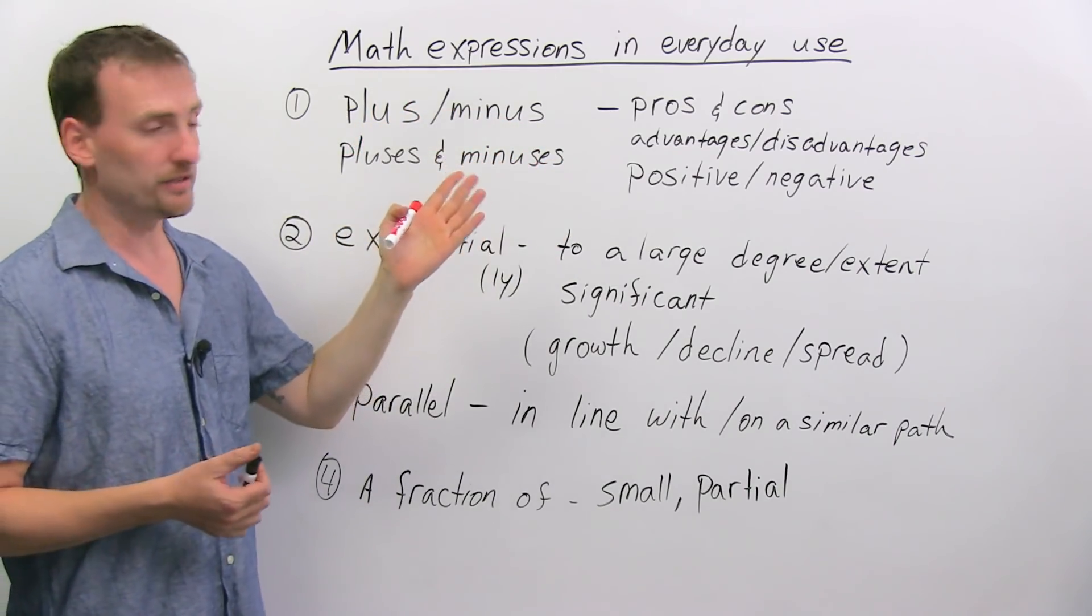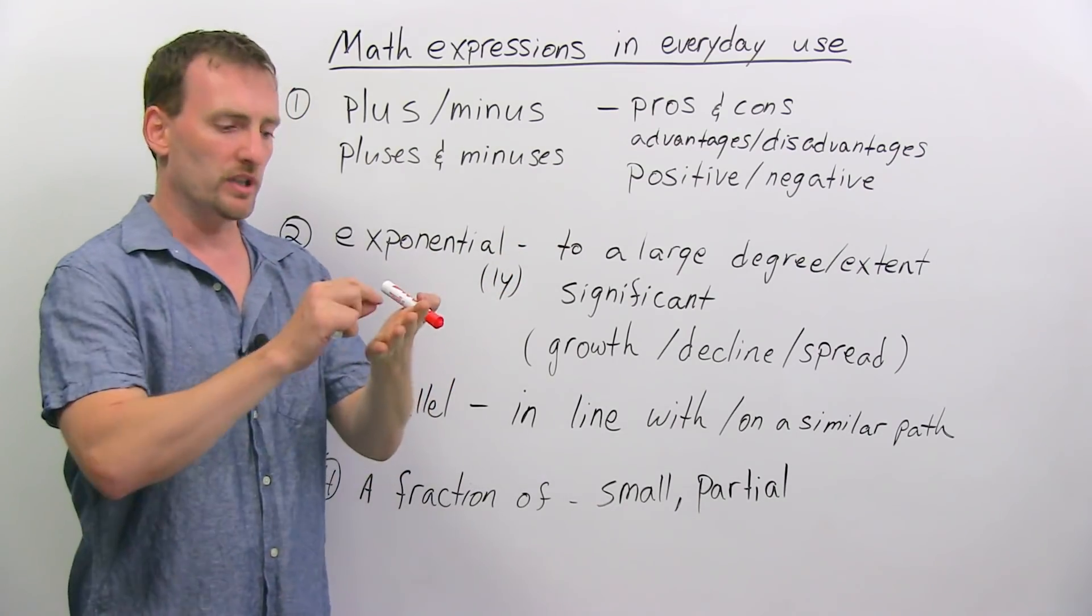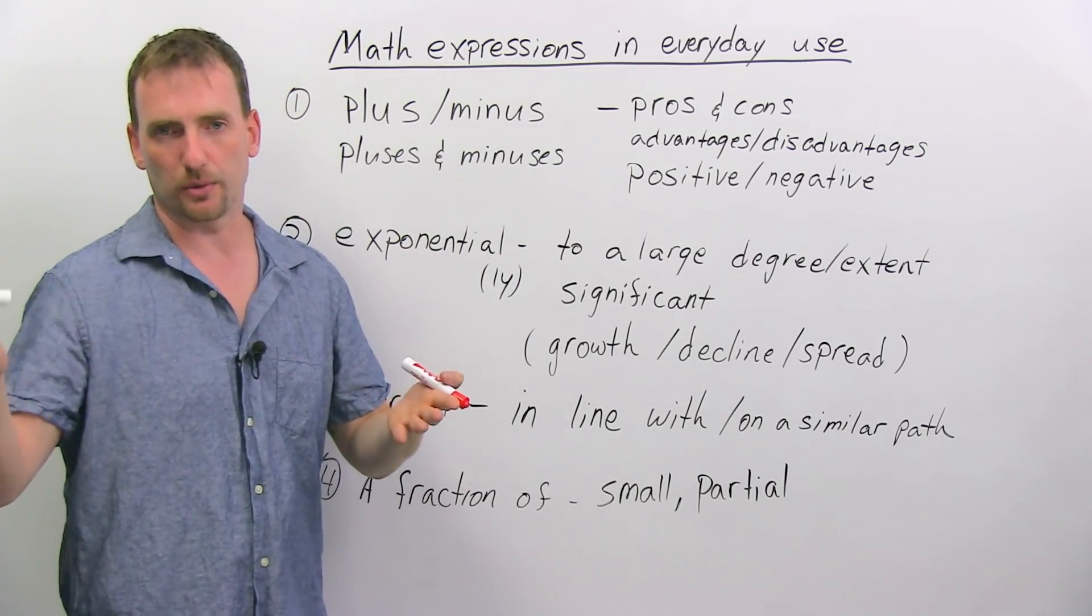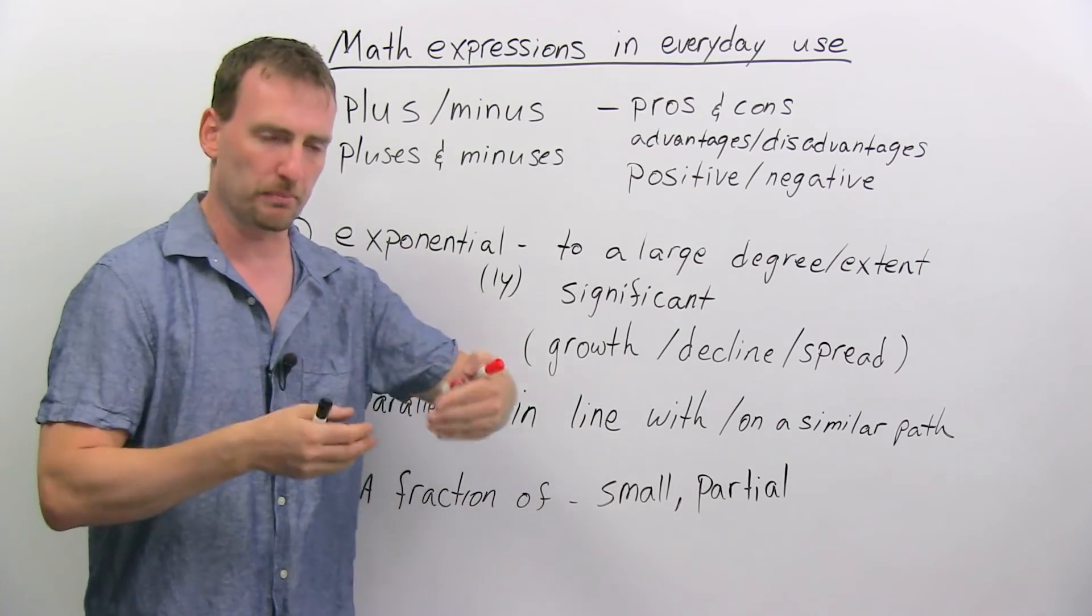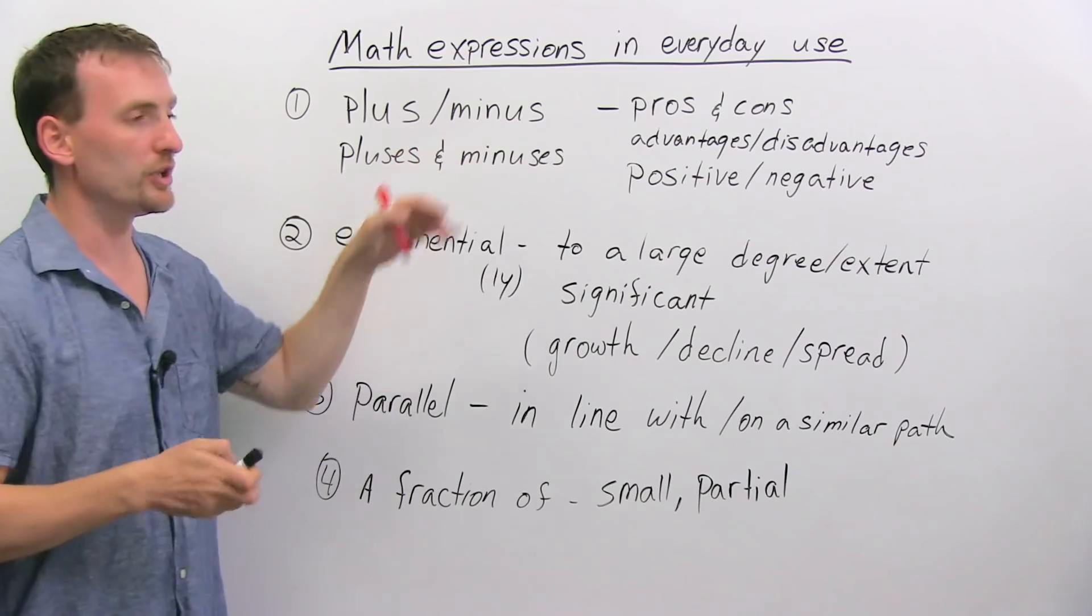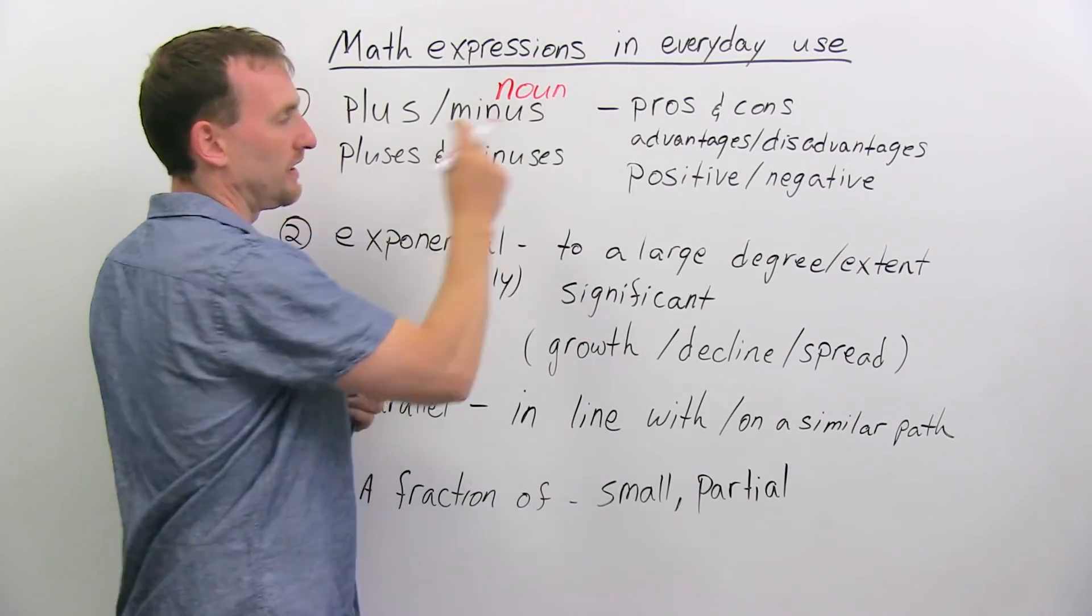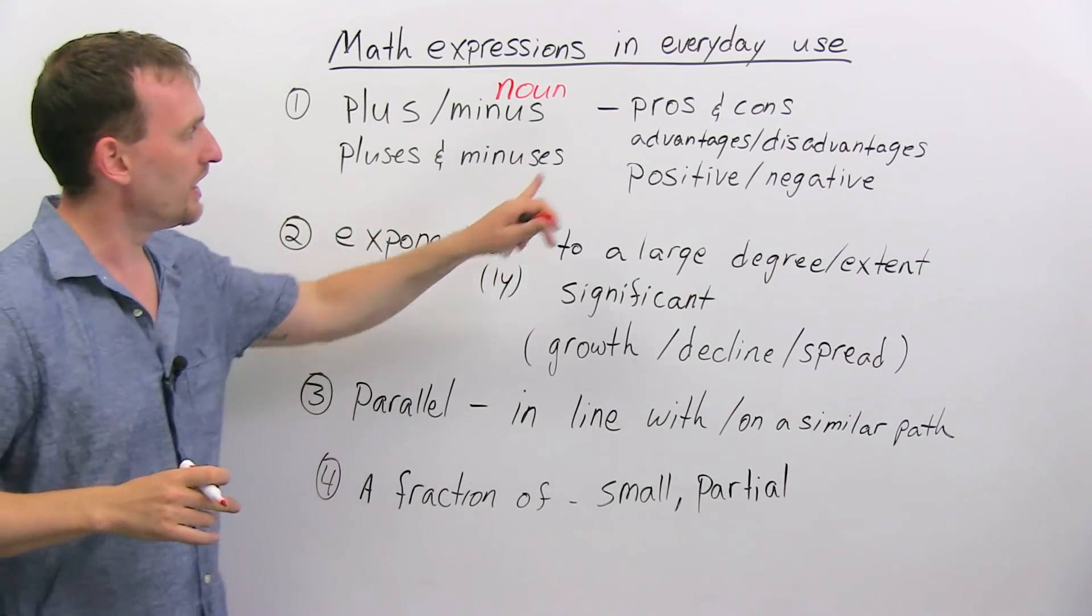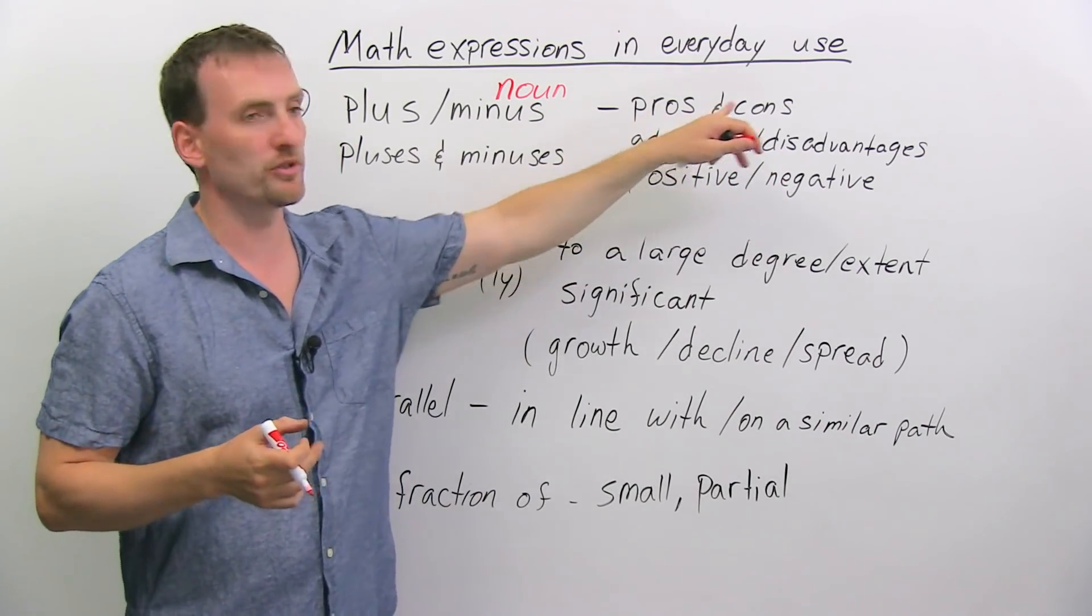Plus and minus, or pluses and minuses. In math, we use one plus one equals. So plus there is more like a verb, but it's more of an equation, it makes the equation move. Here, we're using them as nouns. That's a key feature you have to remember, they're nouns. And basically, synonyms to pluses and minuses are pros and cons.